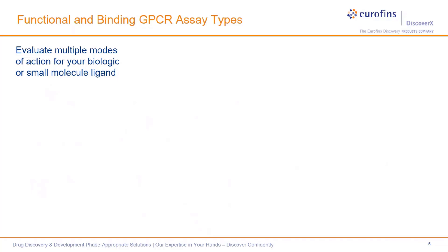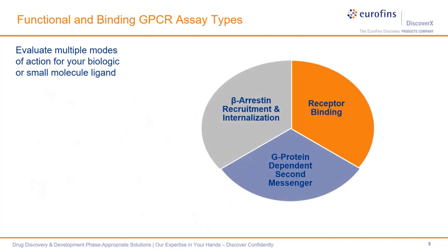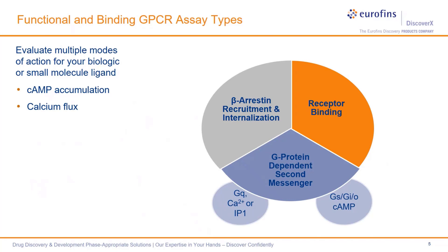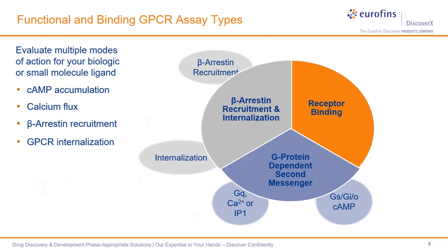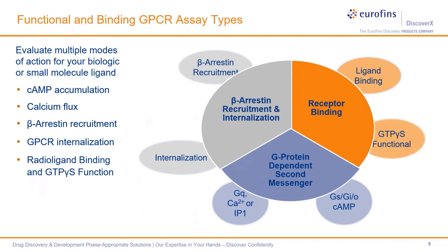To fully characterize your GPCR and obtain accurate ligand or small molecule or biological therapeutic pharmacology, including determining its mechanism of action, evaluate both functional and binding assay types. Measure cyclic AMP accumulation or calcium flux for G-protein-dependent pathways, and assess G-protein-independent pathways like beta-arrestin recruitment and GPCR internalization — all important for ligand bias studies or evaluating therapeutic side effects. Or simply determine if your ligand is binding your specific GPCR of interest.